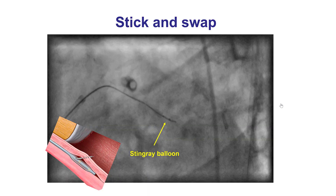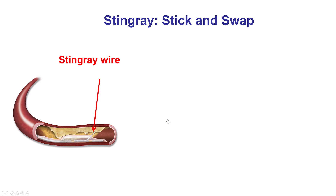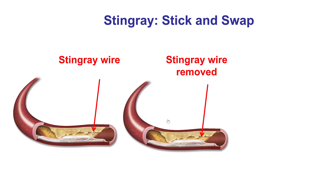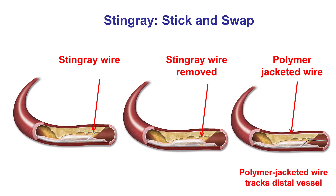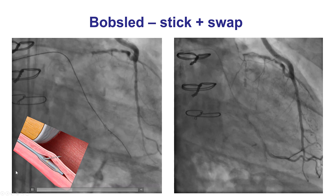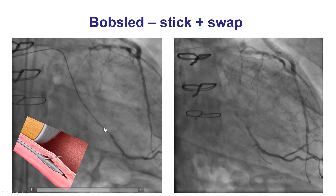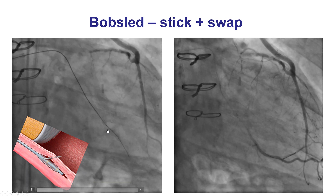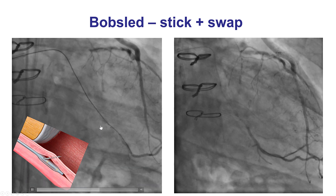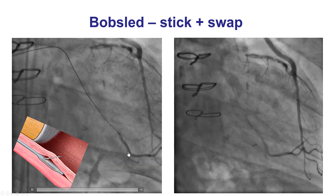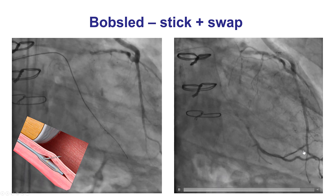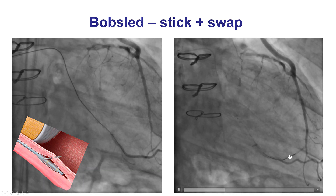This was done using the stick-and-swap technique. A Stingray balloon was delivered distal to the distal cap, and then we performed the stick with a Stingray wire, which creates a fenestration into the true lumen. We then used a Pilot 200 to wire the distal true lumen successfully. The Stingray balloon exit point toward the true lumen is actually proximal to the proximal marker, and the Pilot 200 guide wire on two projections is confirmed into the distal true lumen.